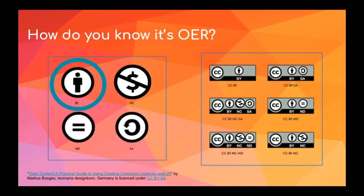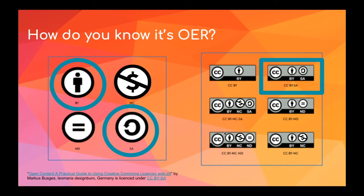For example, if we combine attribution BY and share alike SA, we form the CC BY SA license, which means you must provide an attribution if you're using the work, and you have to put this exact same license on any remixed copies that you make. So if you took someone else's work and revised it a little bit, you have to give credit to the original owner and stick this exact same license on your new material. There are varying degrees of openness to each of these licenses, but the conditions are clearly outlined so you can understand how the material can be used.